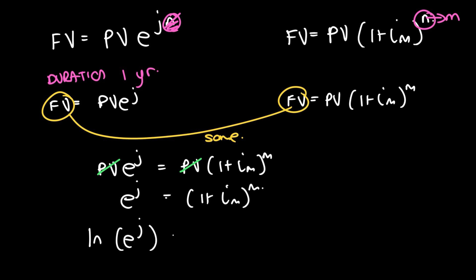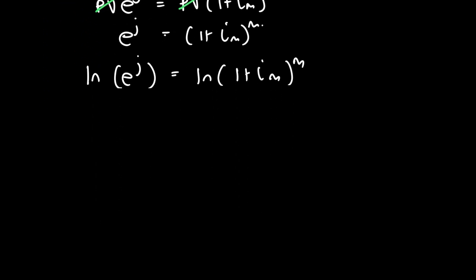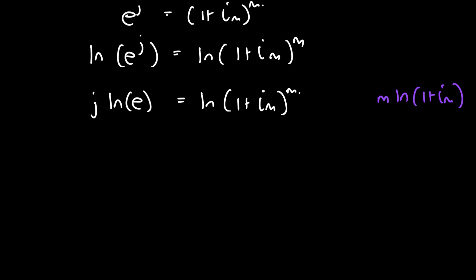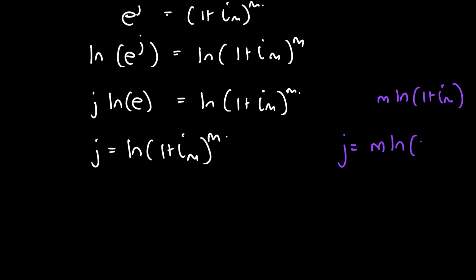Now we can use our logarithm rules. Taking the natural log of both sides, we bring the J from the exponent to the front: J·ln(e) = ln((1 + iM)^M). We can also write the right side as M·ln(1 + iM). Since ln(e) equals 1, we're left with J = ln((1 + iM)^M), which we can also write as J = M·ln(1 + iM).